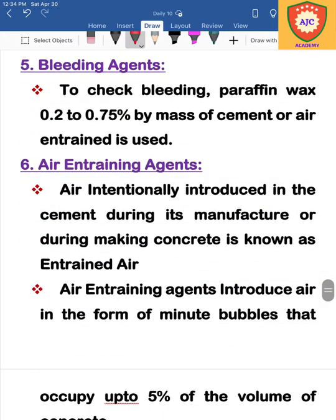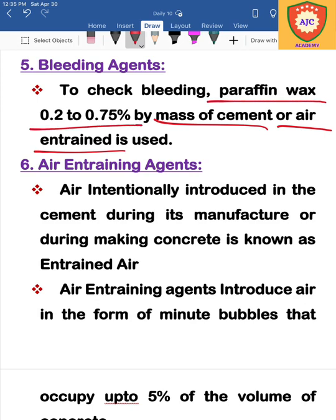The bleeding agent controls bleeding in concrete. We add cement or air-entrained material such as paraffin wax at 0.22% to 0.75% of cement as air-entrained agents. This is the bleeding agent admixture.